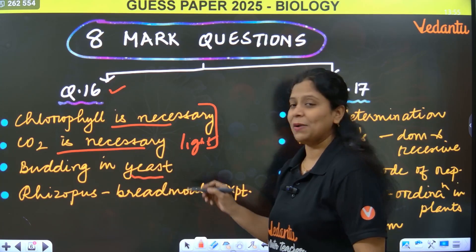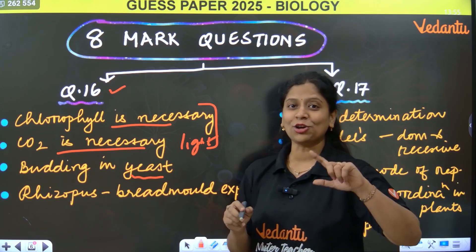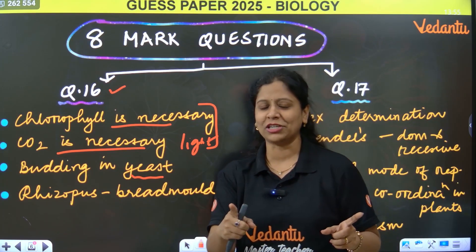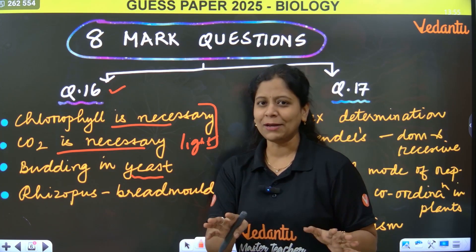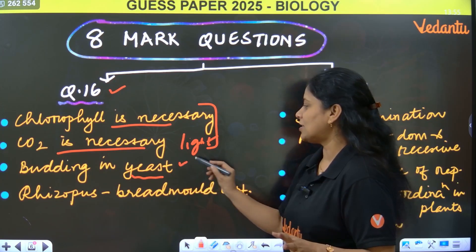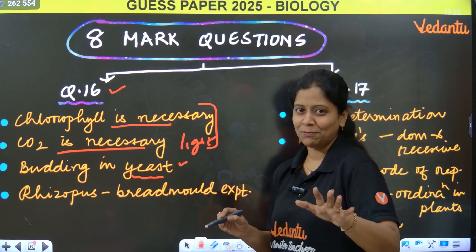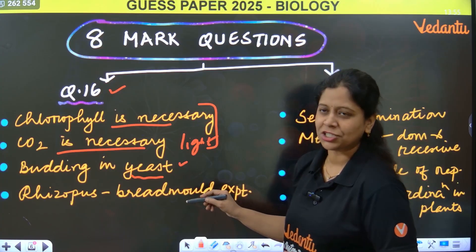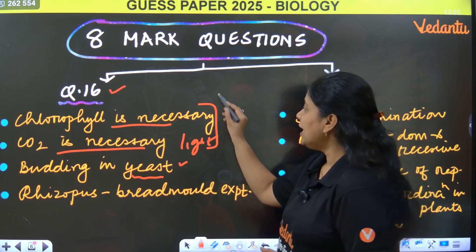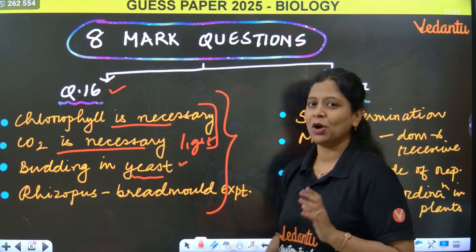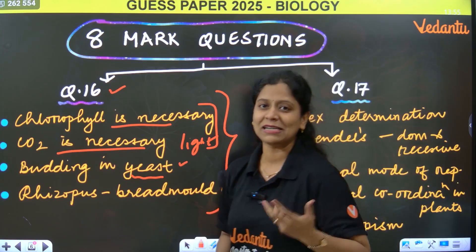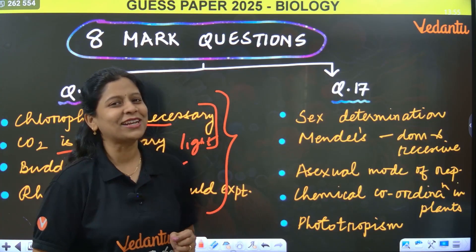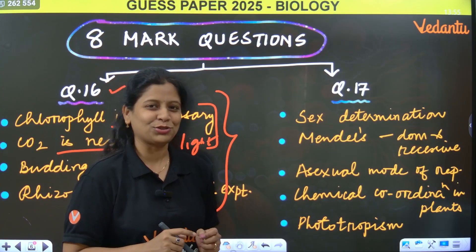Budding in yeast and anaerobic respiration — both are important. But budding in yeast has been repeated in many model papers. Rise of us experiment, bread mold experiment from reproduction chapter — these are very important experiments. All these experiments are very important. Eight marks — you can easily score them.